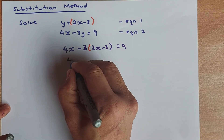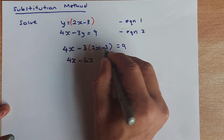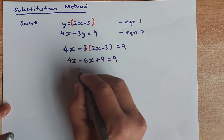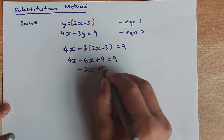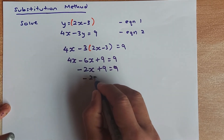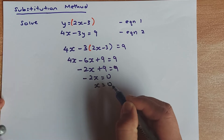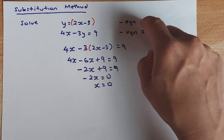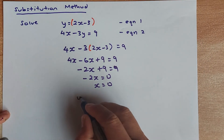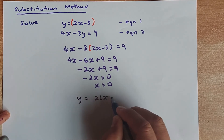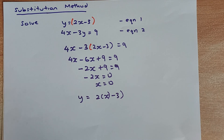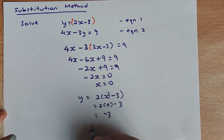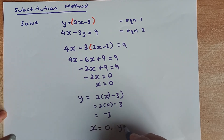Now expand the equation: 4X minus 3 times 2X gives minus 6X, and minus 3 times minus 3 gives plus 9, all equals 9. Simplifying: 4X minus 6X is minus 2X, plus 9 equals 9. Subtract 9 from both sides: minus 2X equals 0, so X equals 0. To find Y, substitute X equals 0 into equation 1: Y equals 2 times 0 minus 3, which gives Y equals negative 3. So X equals 0 and Y equals negative 3.